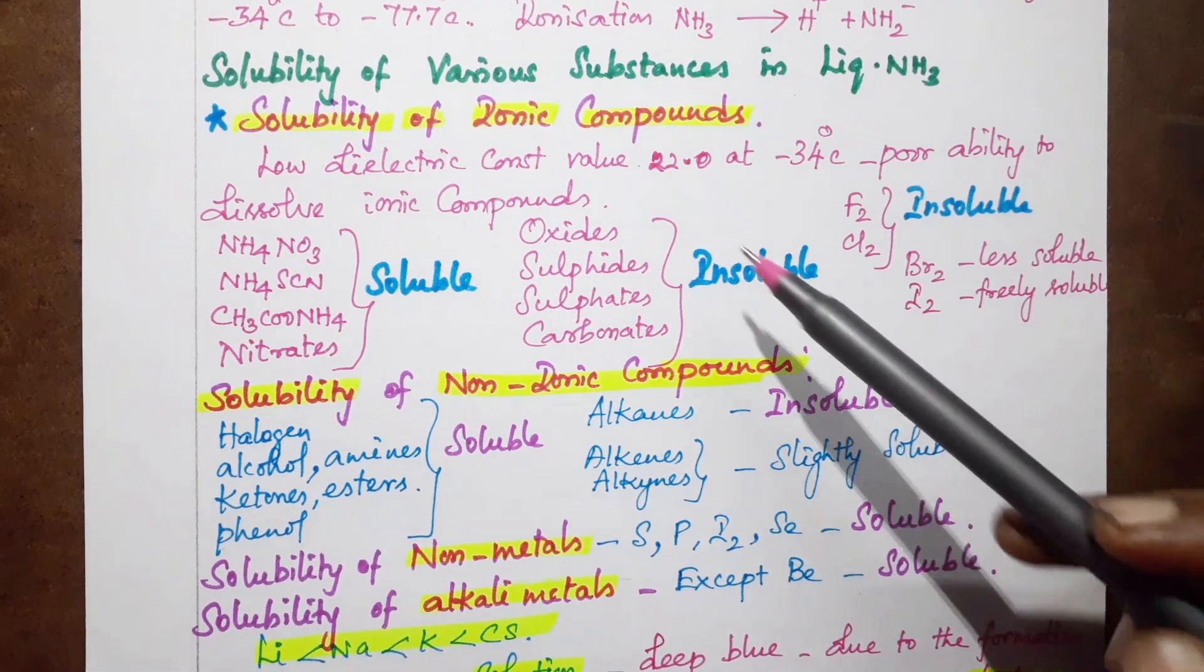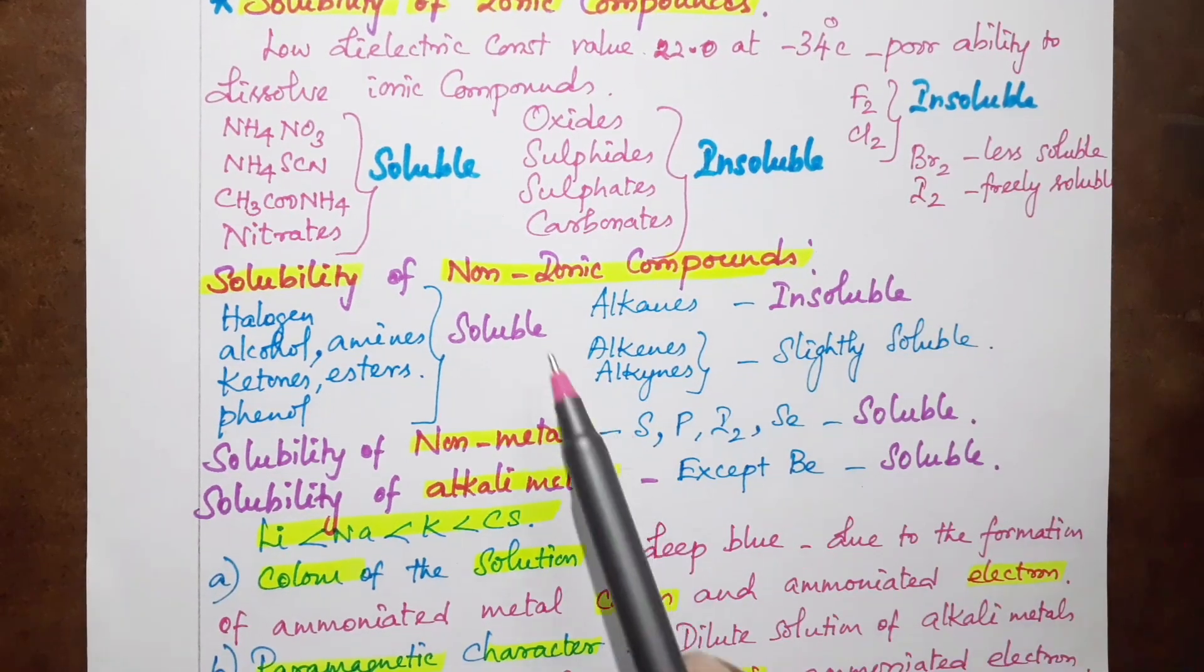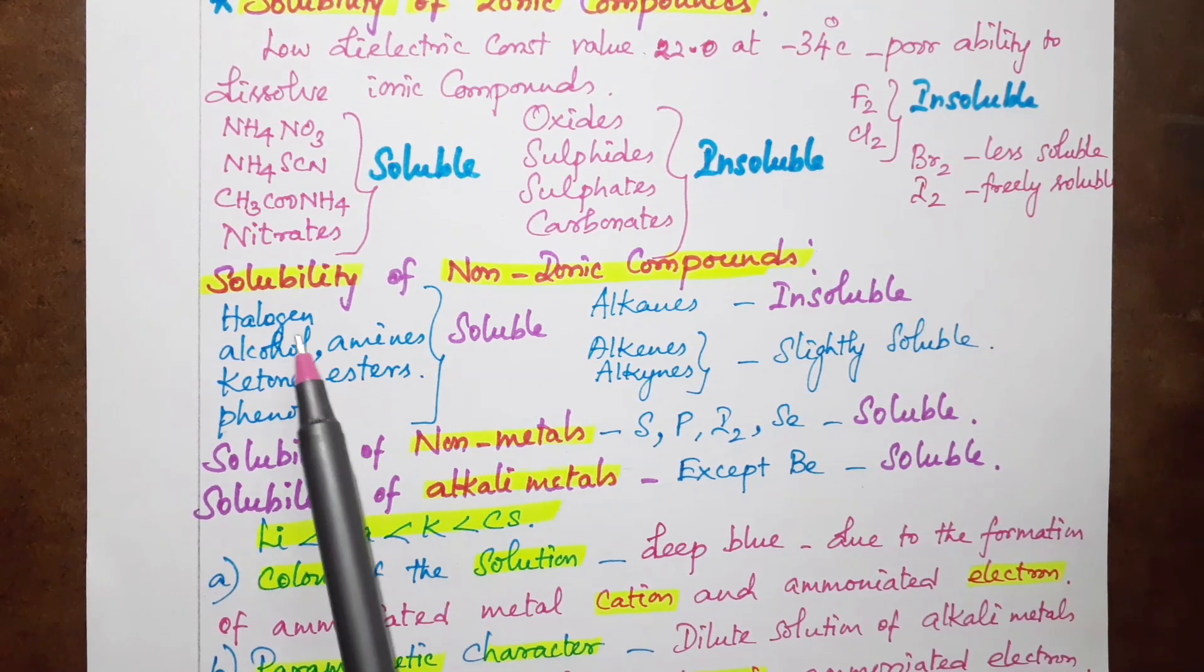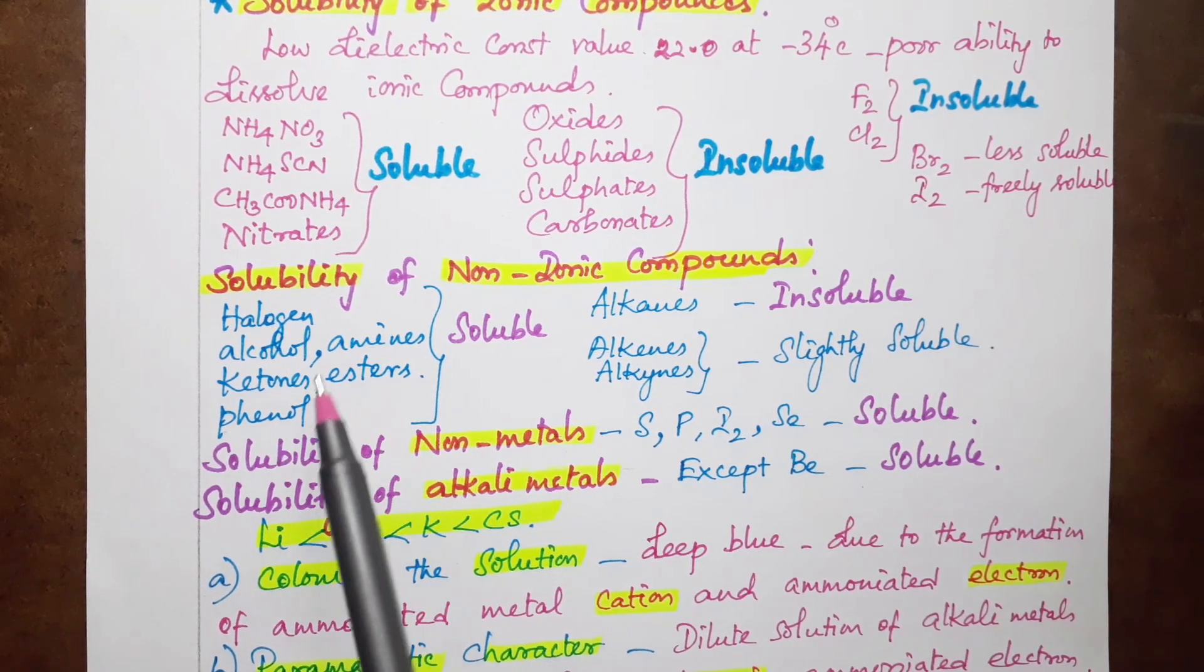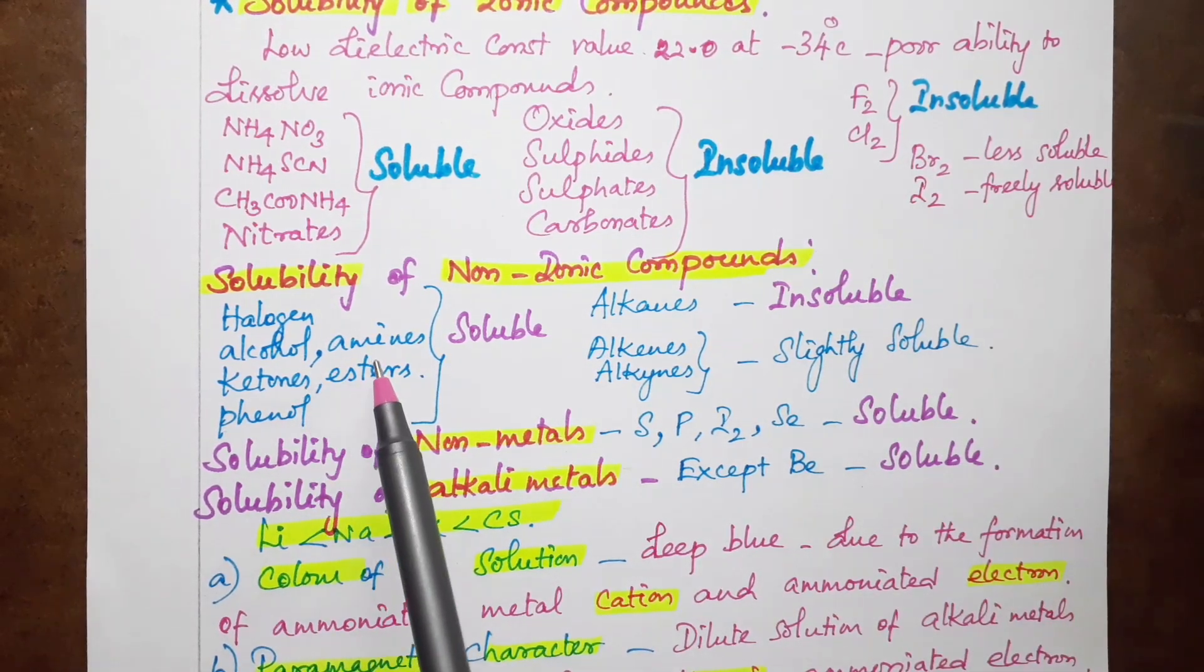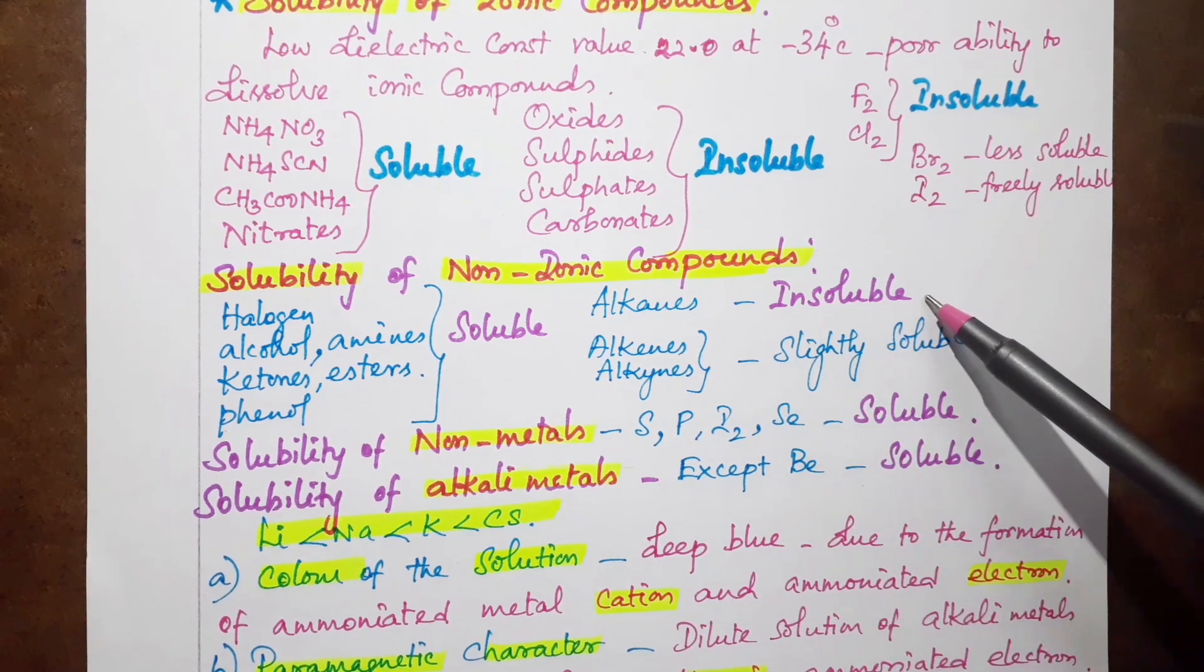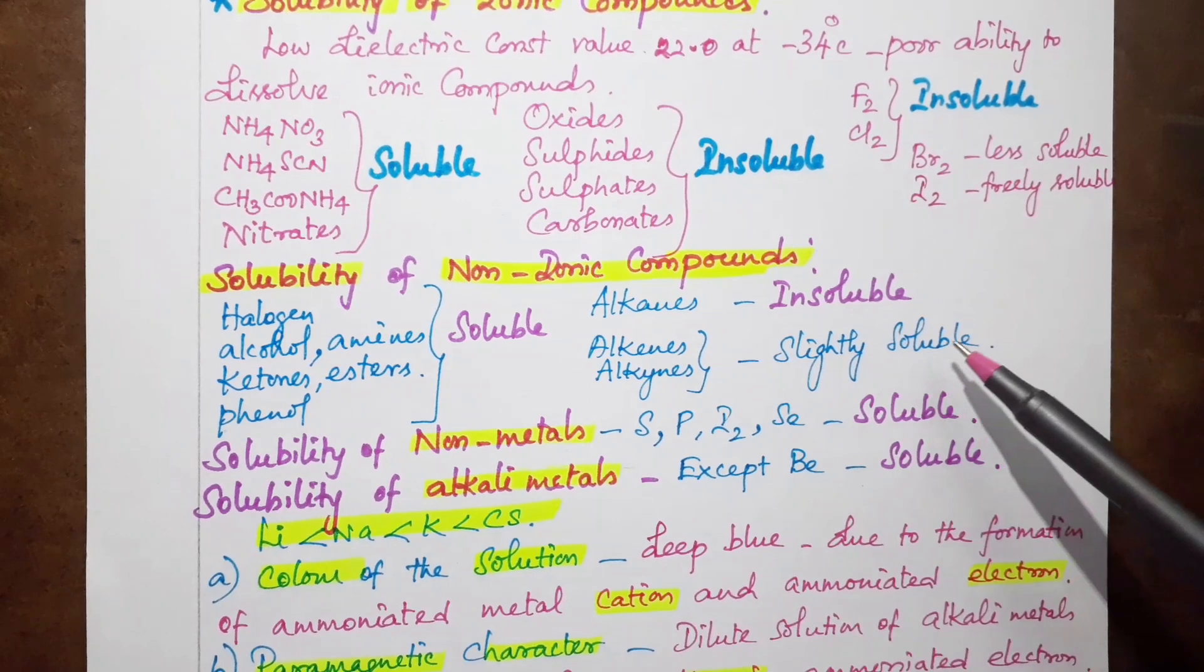Now we see solubility of non-ionic compounds. Non-ionic compounds that are soluble include halogen, alcohol, amines, ketones, esters, and phenols. However, alkanes and alkenes are not soluble in liquid ammonia.